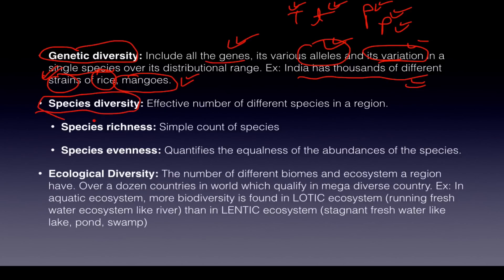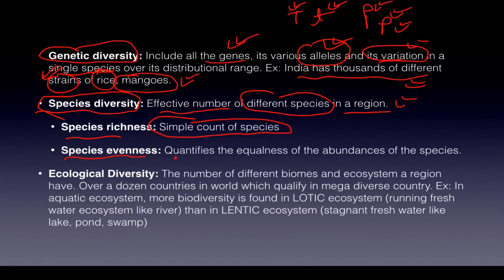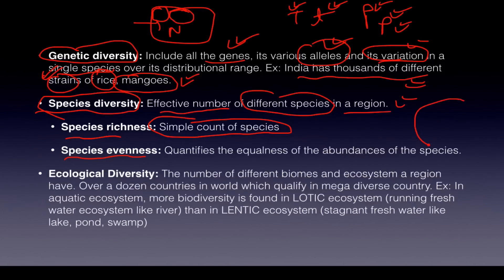Secondly, there is species diversity — the effective number of different species in a region. There are two types: species richness, which is the simple count of species in an area, and species evenness, which not only counts the number of species but checks whether all species are evenly distributed across the area. For example, if one area has only lions and another has all the remaining animals, that is only species richness, not species evenness. Species evenness refers to the abundance and equalization of species across smaller areas of a larger region.